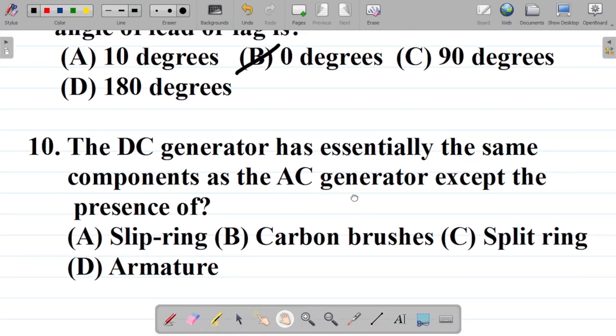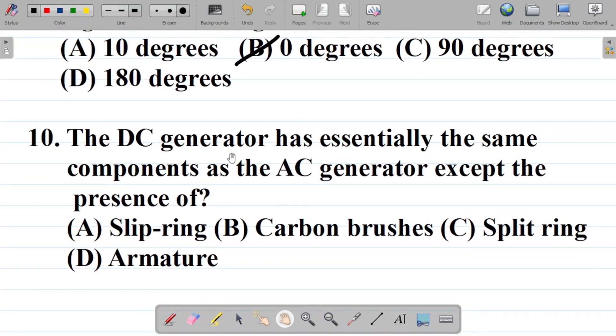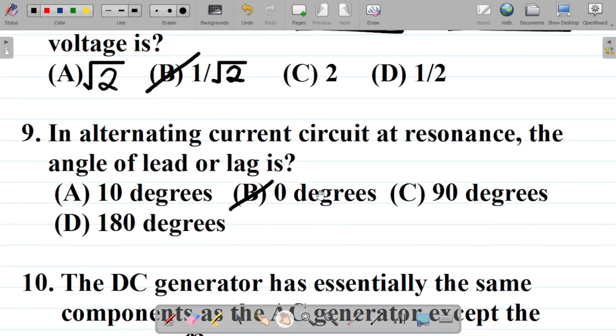One final question. Question 10 says the DC generator has essentially the same components as the AC generator except the presence of... The answer to this question is C, the split ring. What differentiates the DC generator from the AC generator is something called a split ring. You could make your own research on how this works, but that's a question you should note because it's almost always repeated. The answer is split ring.